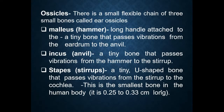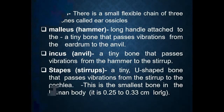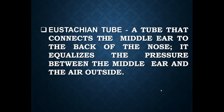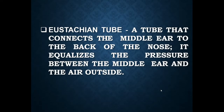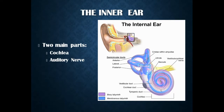Next is the eustachian tube — a tube that connects the middle ear to the back of the nose. It equalizes the pressure between the middle ear and the outer ear. When you travel to higher altitudes on a mountain, sometimes your ears close, and you need to take deep breaths. Taking those deep breaths opens up the eustachian tube and relieves the congestion in your ear.